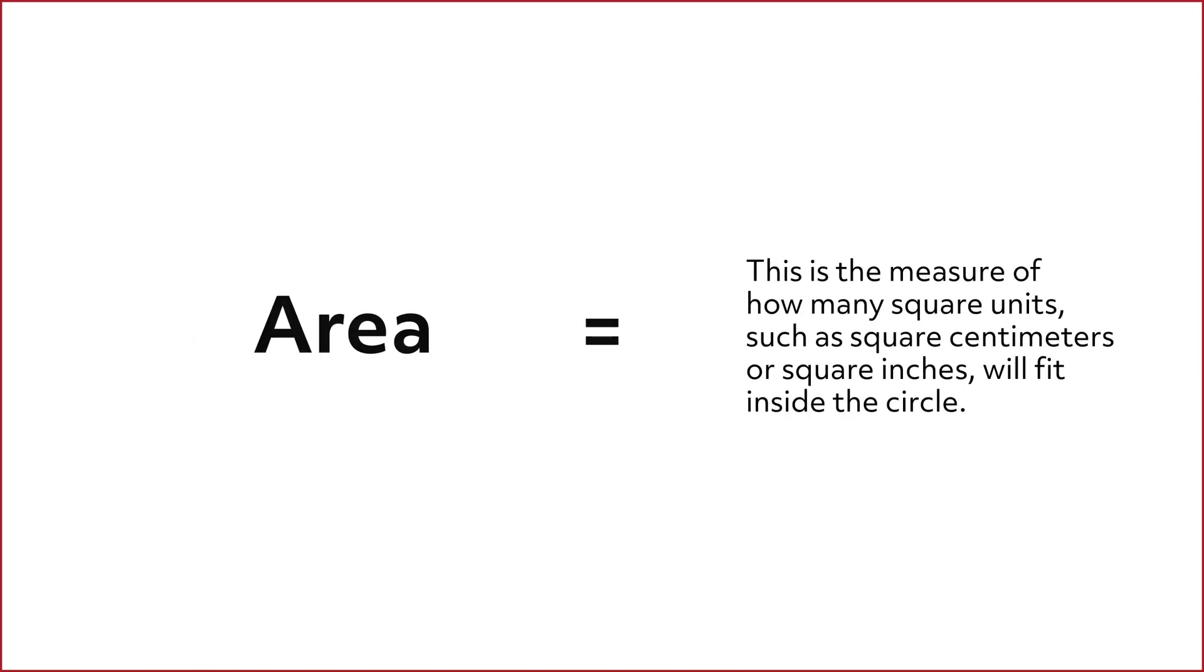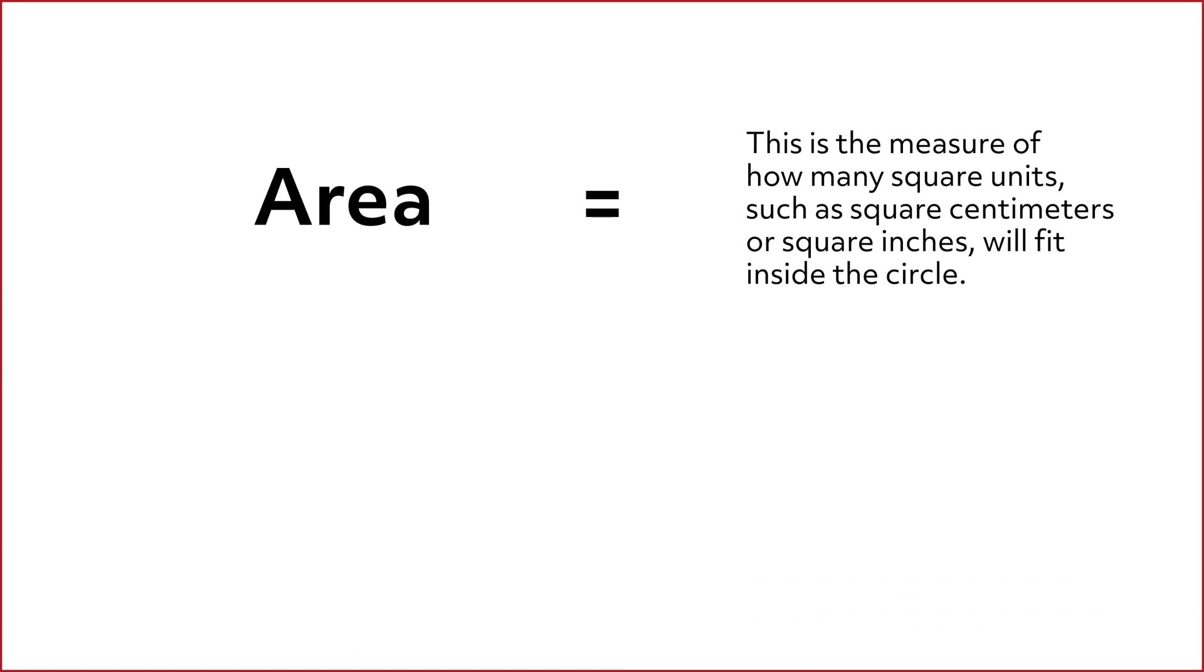The big A in the formulas is the area of the circle. This is the measure of how many square units, such as square centimeters or square inches, will fit inside the circle. If we wanted to paint a large, solid circle as part of a mural, we'd need to know the area of the circle to calculate how much paint we would need to buy to fill the whole circle.